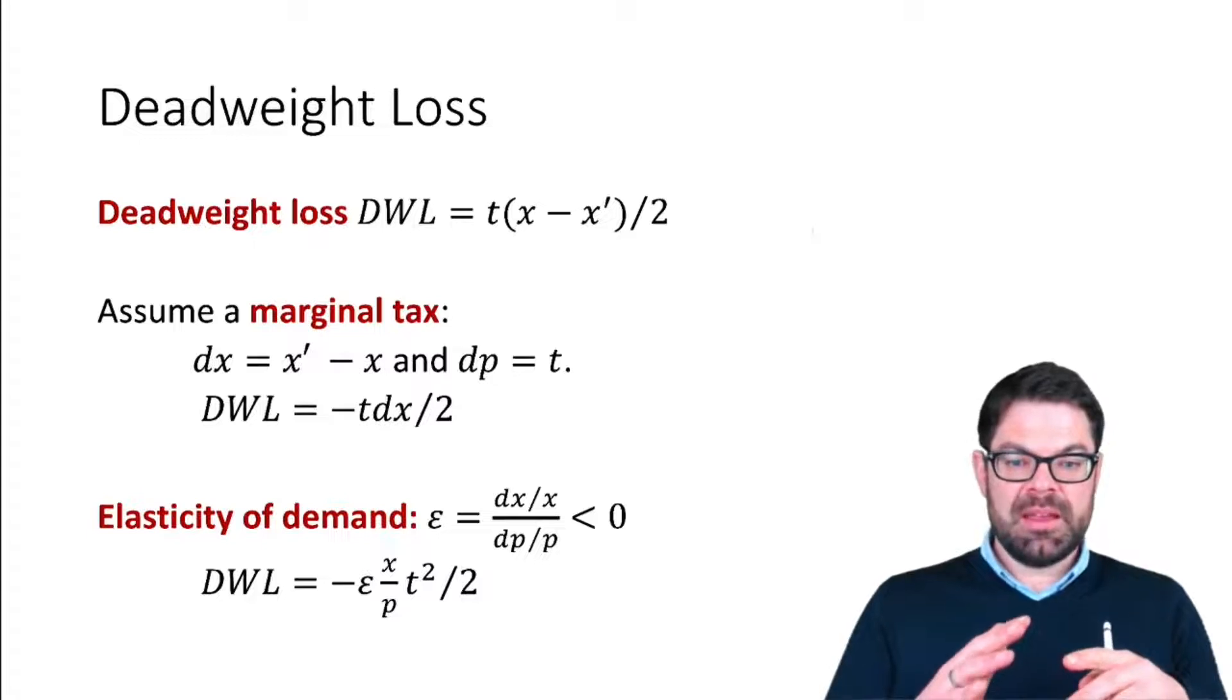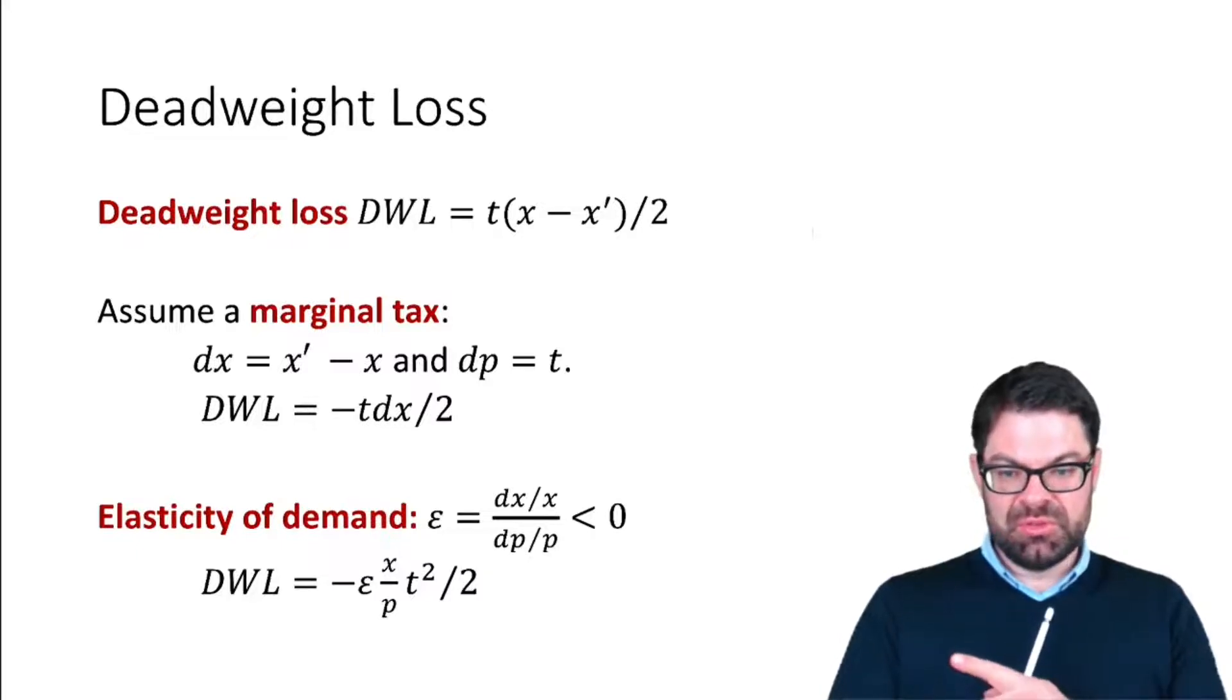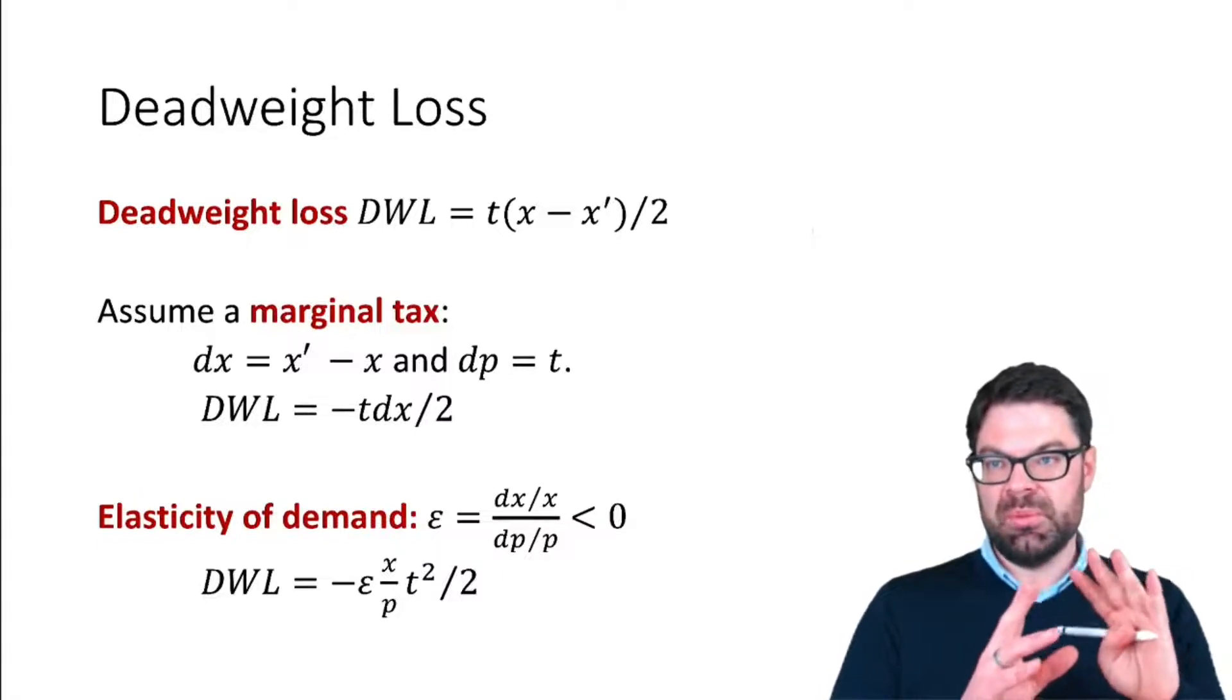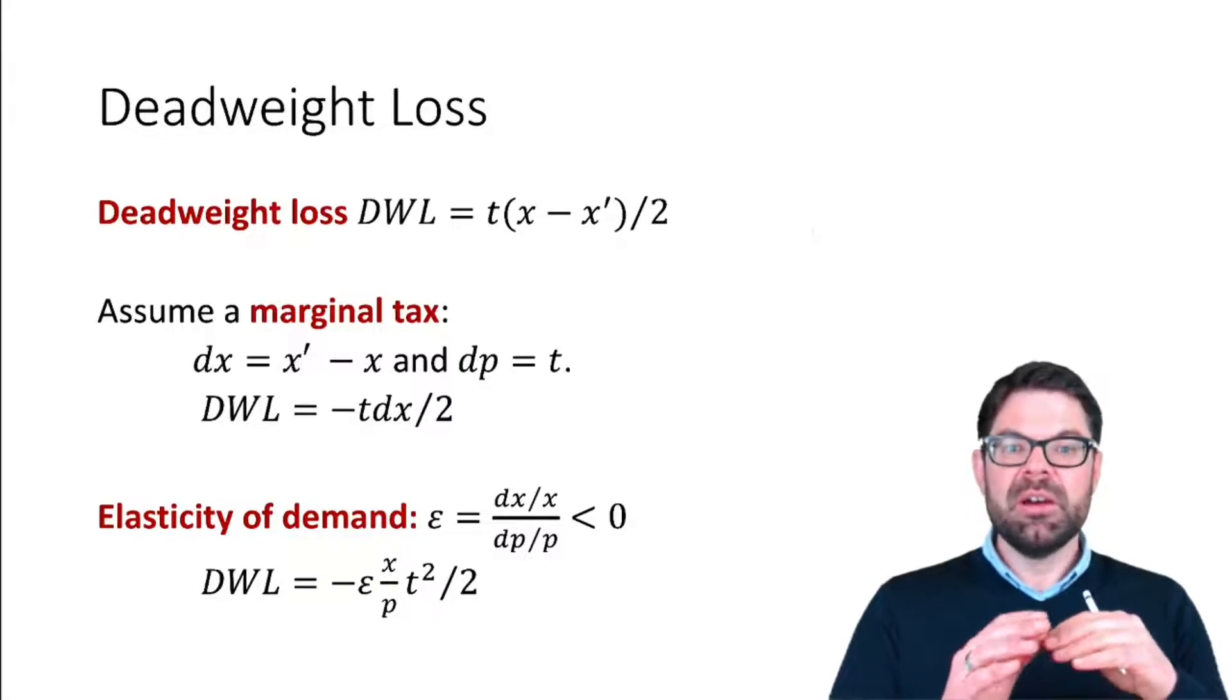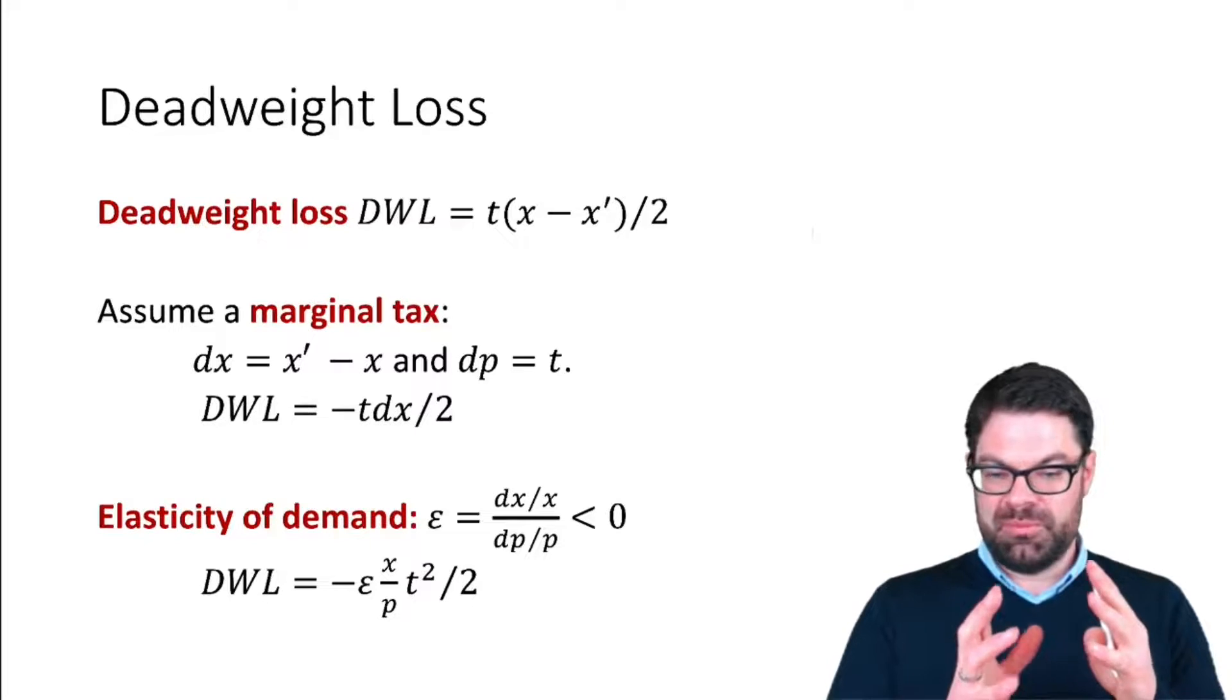Now the goal here is for a given revenue to minimize the amount of the deadweight loss. To understand what's happening, it's very useful to express the deadweight loss the way we did here because it depends on basically two factors. Forget for a moment this x/p which just tells us what is the initial equilibrium from which we start.